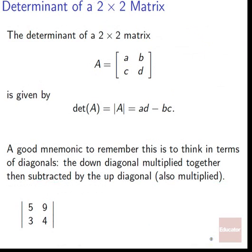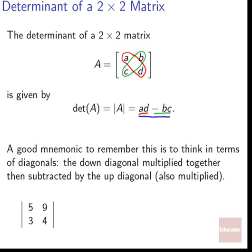The determinant of a 2×2 matrix A equals [a, b; c, d] is given by det(A) = AD minus BC. A good mnemonic is to think in terms of diagonals: the down diagonal — A times D — multiplied together, then subtracted by the up diagonal — B times C. So it's AD minus BC; we subtract the up diagonal.